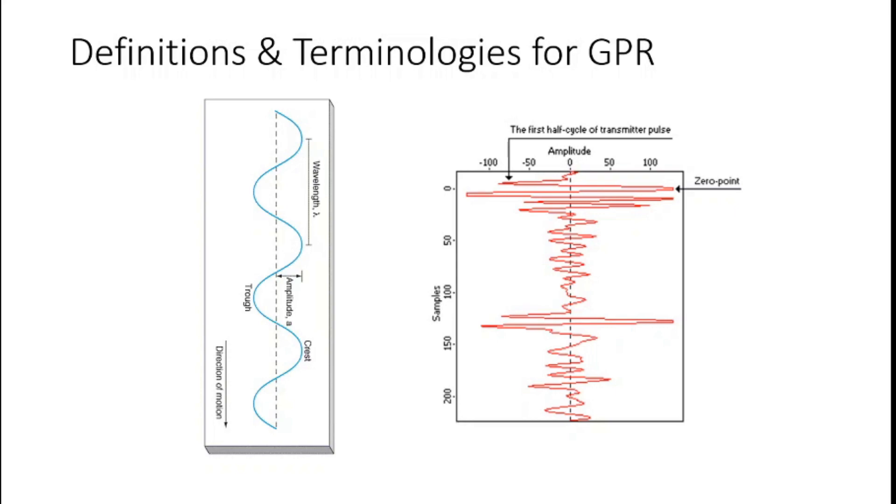So basically what will be the definitions and terminologies of GPR that we have to know? A wave consists of some crests and some troughs. This is basically disturbance in some sort of field, and in GPR we are talking about electric and magnetic field which are perpendicular to each other, and both fields are perpendicular to the direction of propagation of wave. Two consecutive crests or two consecutive troughs, the distance between these gives the wavelength lambda. Amplitude is basically the magnitude of the disturbance from the mean line.